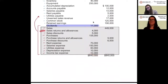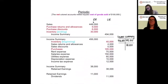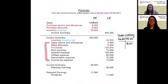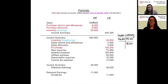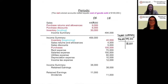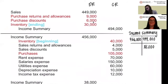For what we need to credit: sales returns and allowances, sales discounts, purchases, rent expense, salaries expense, utilities expense, depreciation expense, and income tax expense. We also credit our beginning inventory, because that's not what we have anymore — we debited the ending inventory of $30,000. We take out the beginning inventory number, credit it, and debit the income summary.